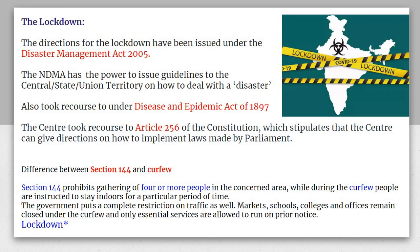The coronavirus spread throughout the world, and in India a prompt action was taken — the imposition of a lockdown. The directions for the lockdown were issued under the Disaster Management Act 2005, but some provisions were also taken from the Epidemic Diseases Act 1897.